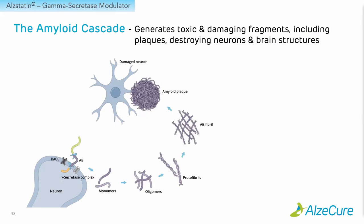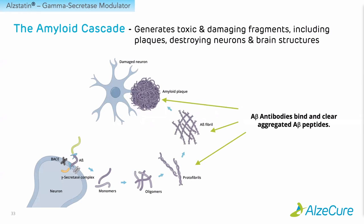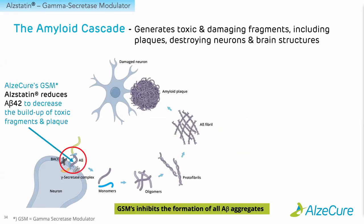This slide shows the classical amyloid cascade, which generates these toxic and damaging amyloid aggregates. The A-beta is cleaved out forming single monomers, which then aggregate into oligomers, fibrils, and eventually large plaques. The A-beta antibodies bind and clear aggregated A-beta peptides — late-stage aggregates such as fibrils, protofibrils, and plaques. Alstatin, on the other hand, which is a gamma secretase modulator, reduces the production of the initial building blocks, the A-beta 42, and thereby prevents the formation of all of these A-beta aggregates.